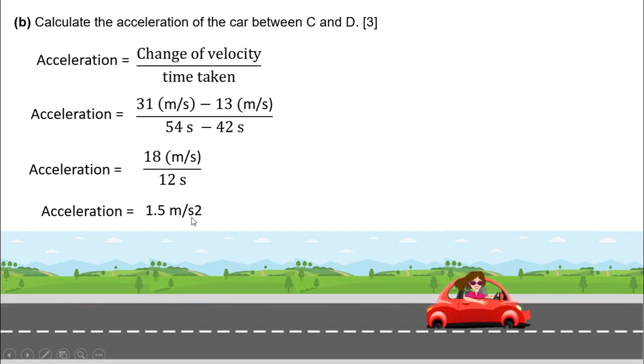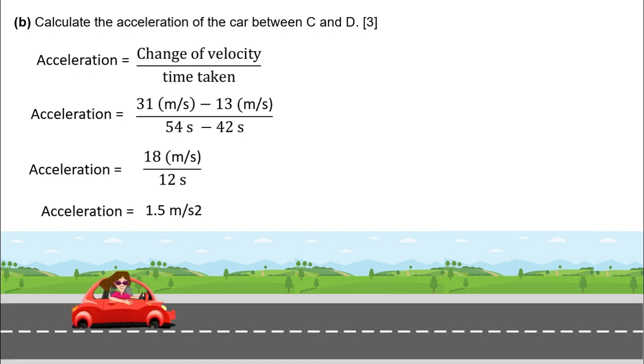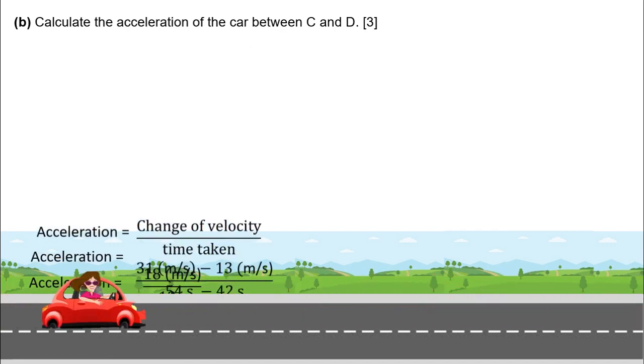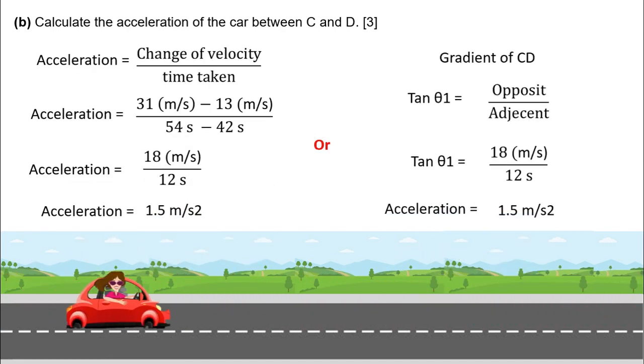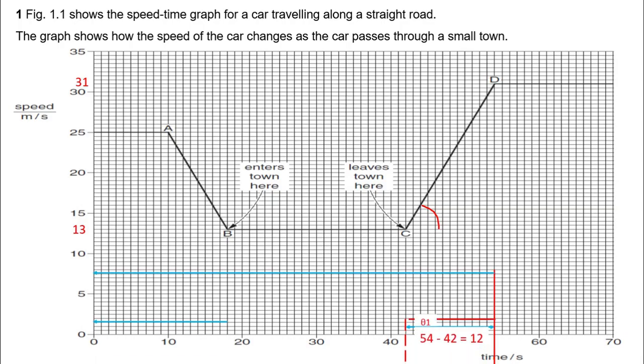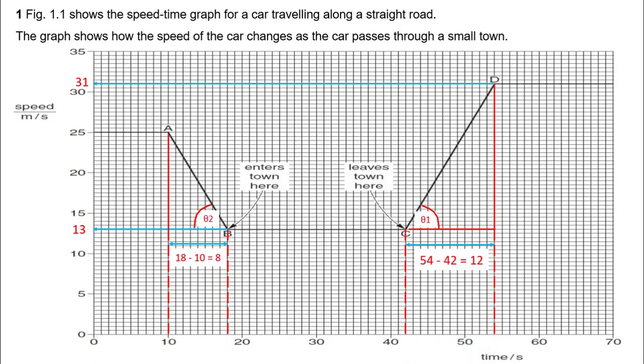On the other hand, we can find the acceleration by measuring the slope of the particular graph section. In order to find the slope, we have to get the tan value of this particular graph segment CD. We can write tan theta equals opposite divided by adjacent. The length of our opposite is 18 meters per second and the length of our adjacent is 12 seconds.